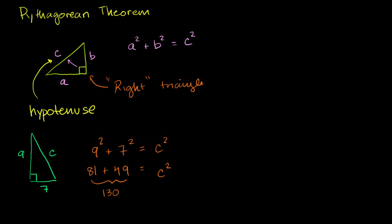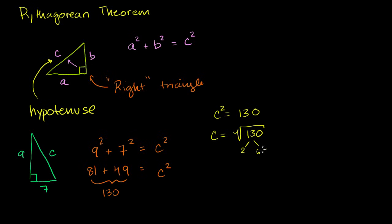So what is c? c squared equals 130, which means c equals the square root of 130. I'm only taking the principal root because c must be positive — we're dealing with a distance, so we can't take the negative square root. If we want to simplify: 130 is 2 times 65, which is 5 times 13. These are all prime numbers, so that's as simple as it gets. c equals the square root of 130.